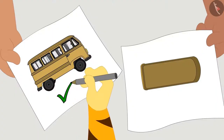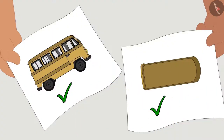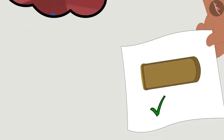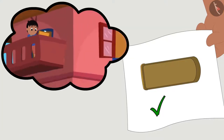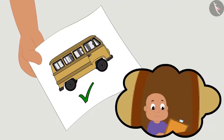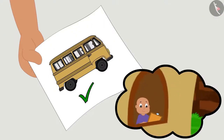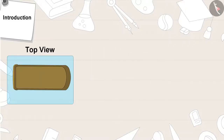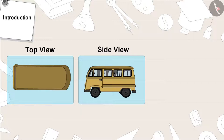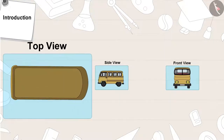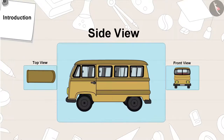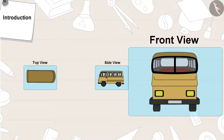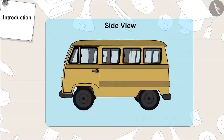In fact, the drawings of both Raju and Bablu are correct. Raju had drawn the top view of the bus, whereas Bablu saw the bus from the side while drawing it. All objects can be viewed from three different sides — from above, that is top view, side view, and front view. Let's understand this in detail.